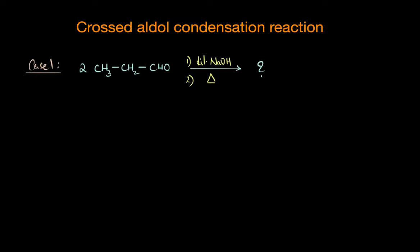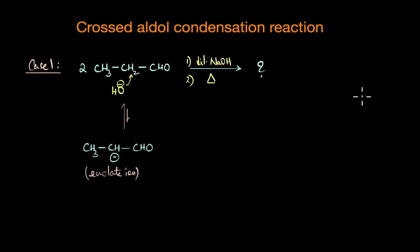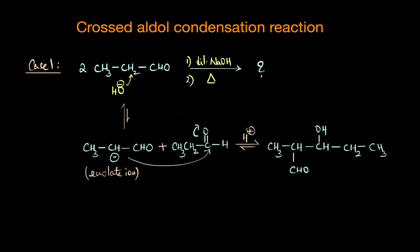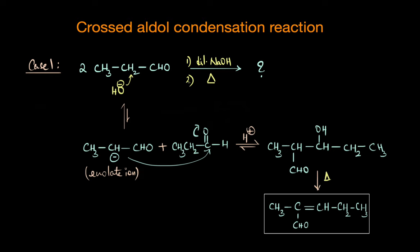Let's look at the first case. The first step in this aldol reaction would be the abstraction of the alpha hydrogen atoms. OH minus would abstract the alpha hydrogen atom and produce the corresponding enolate ion, which is CH3CH minus CHO. The second step is the nucleophilic addition reaction where the enolate ion attacks another molecule of aldehyde. The final product obtained after protonation is this beta-hydroxy aldehyde, which on heating can further undergo dehydration to give the corresponding alpha-beta unsaturated compound, with the double bond formed by elimination of a water molecule between the alpha and beta carbon atoms.